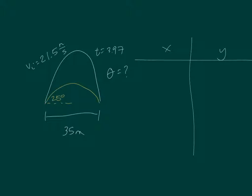So v-bar-x equals vi cosine theta, and vi-y equals vi sine theta. That's exactly right — it's cosine and sine. Theta is embedded in the velocities. When you solve this problem, you really need to investigate your velocities. So let's start with that first.